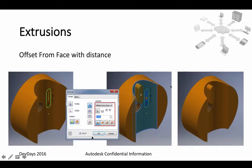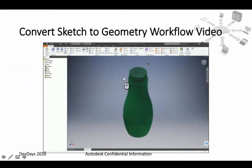One new feature inside Extrusions is 'Offset from Face.' This means the geometry and sketch don't have to be based on the plane of the face from which you want to create the extrusion — it can be somewhere else. You can use this offset from face option so that the extrusion will take place from the selected face's surface.